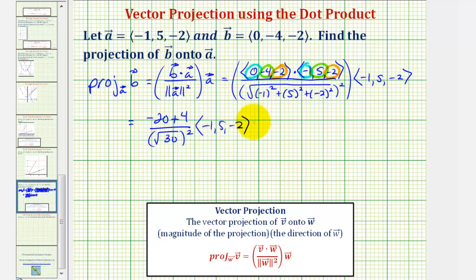So notice how our scalar multiple is negative sixteen over thirty times vector A, but this fraction simplifies to negative eight-fifteenths.